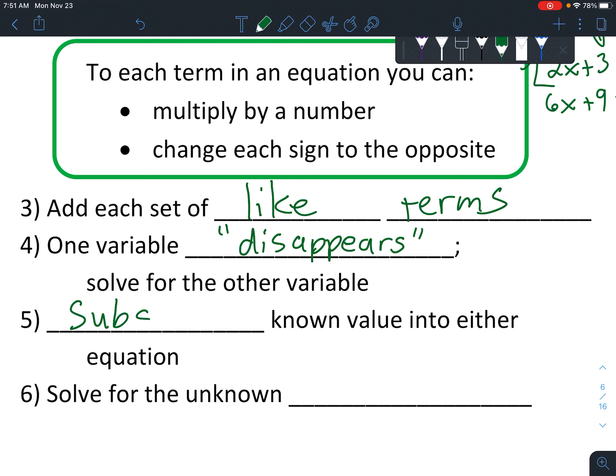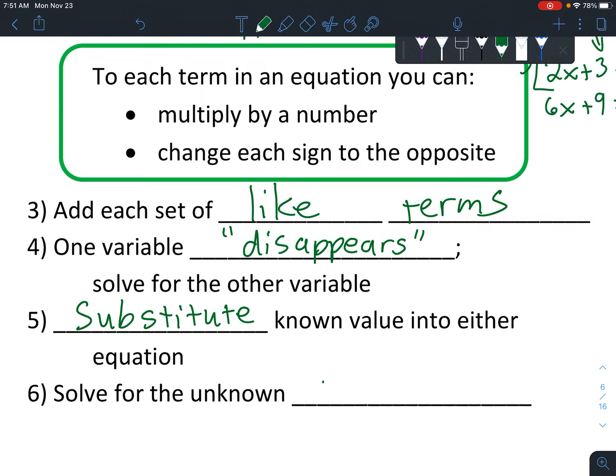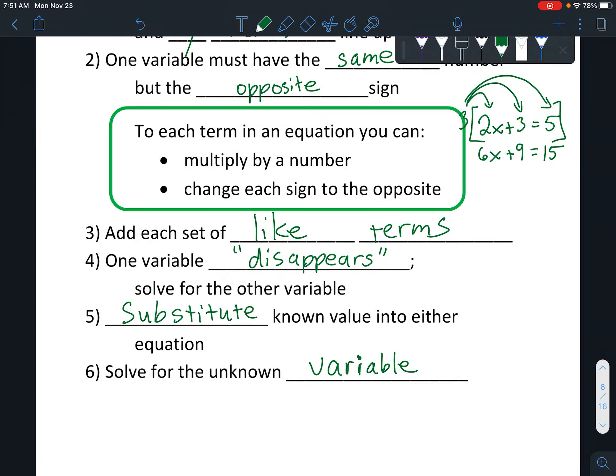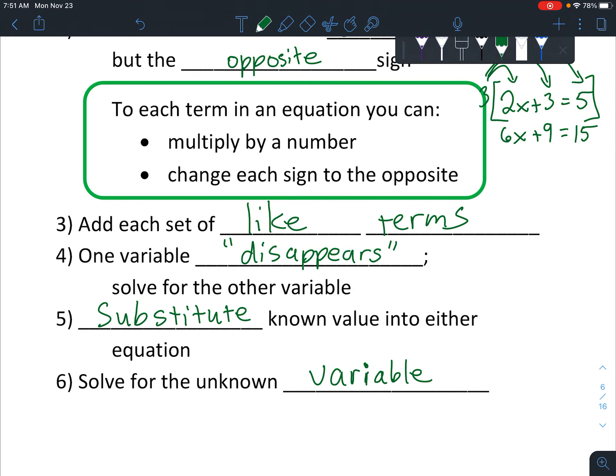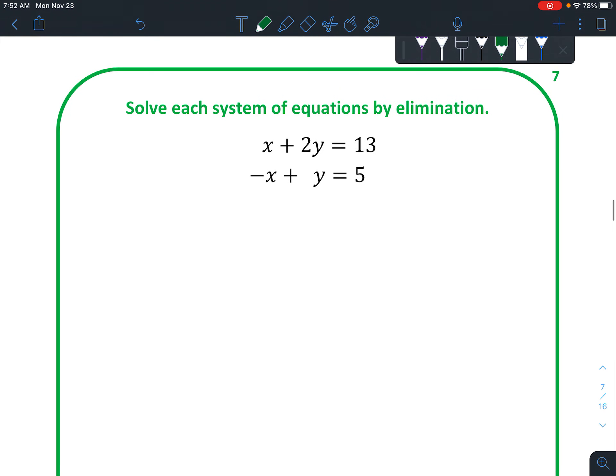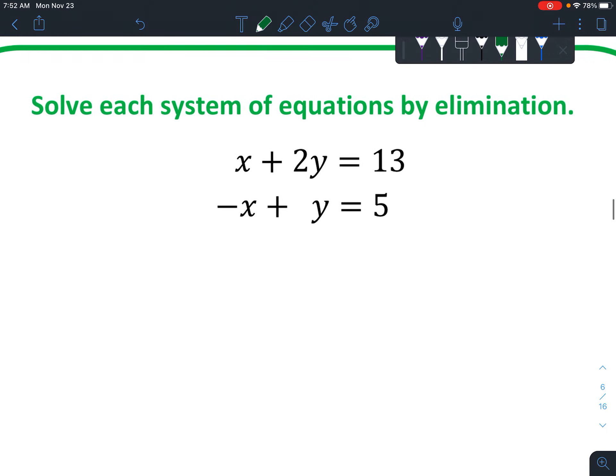And then, this is kind of confusing when it's written out in steps. You're going to substitute, but we will practice it, the known value into either equation. Solve for the unknown variable. I generally just use whichever equation looks like it will be a little bit more simple to solve or smaller numbers or whatnot. Let's practice this. That's the important thing.